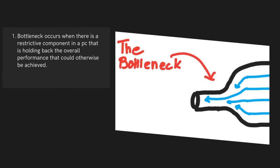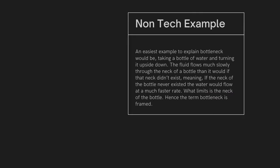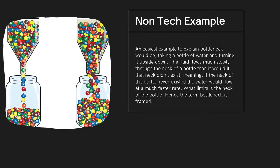A bottleneck occurs when there is a restrictive component in a PC that is holding back the overall performance that could otherwise be achieved. The easiest example to explain a bottleneck would be taking a bottle of water and turning it upside down. The fluid flows much more slowly through the neck of a bottle than it would if that neck didn't exist — meaning the water would flow at a much faster rate. What limits the flow of water is the neck of the bottle. Hence the term bottleneck is framed.